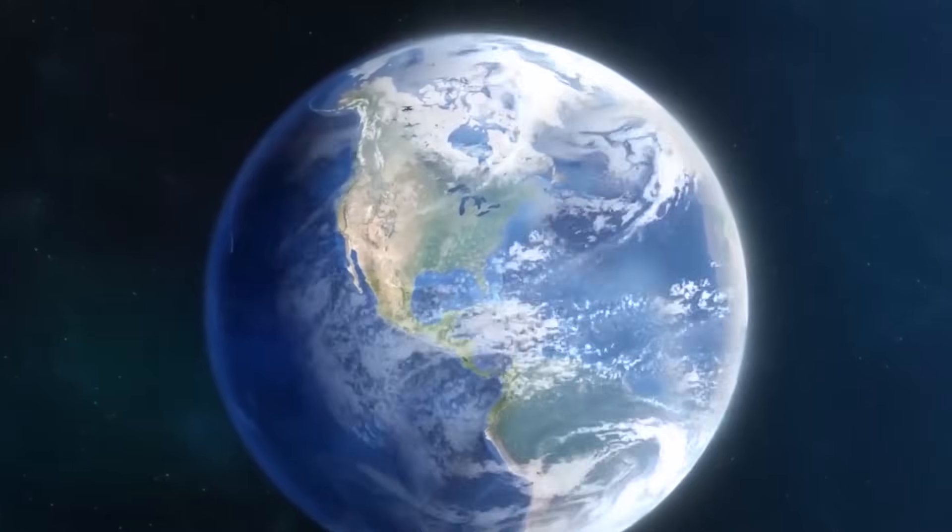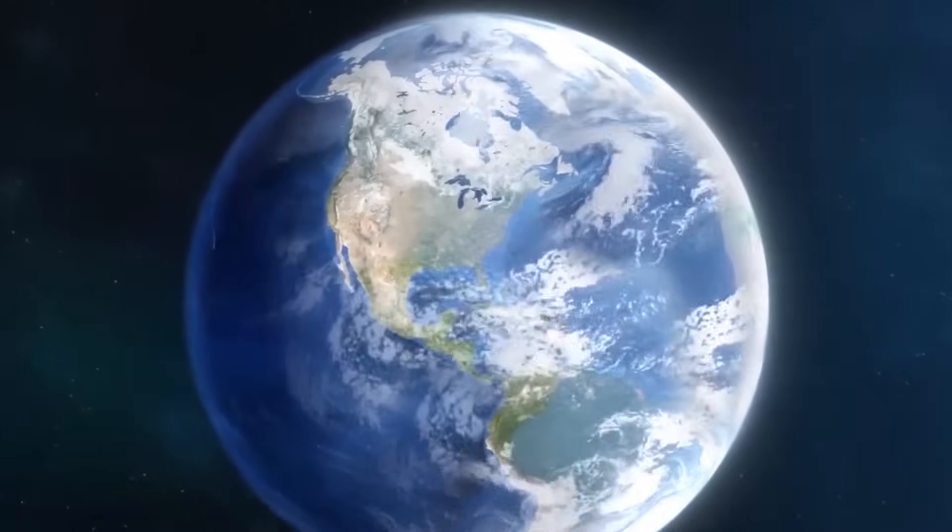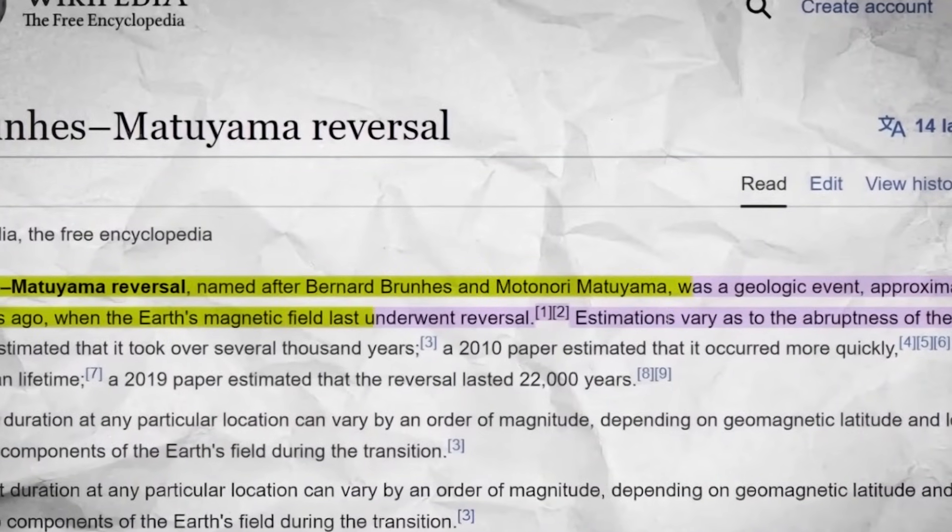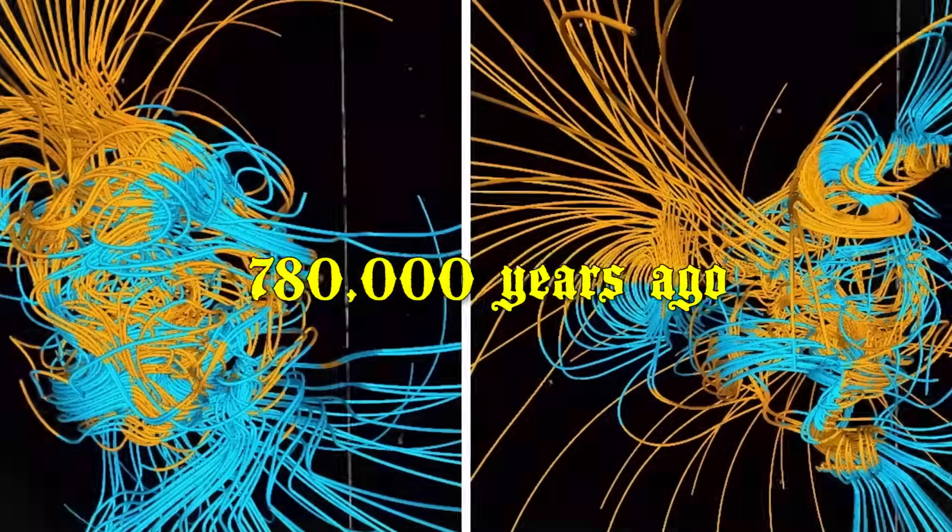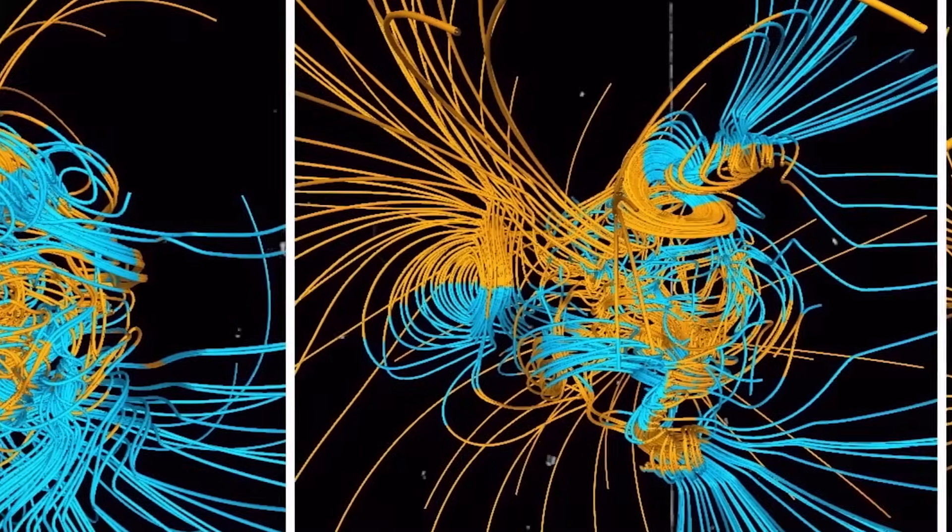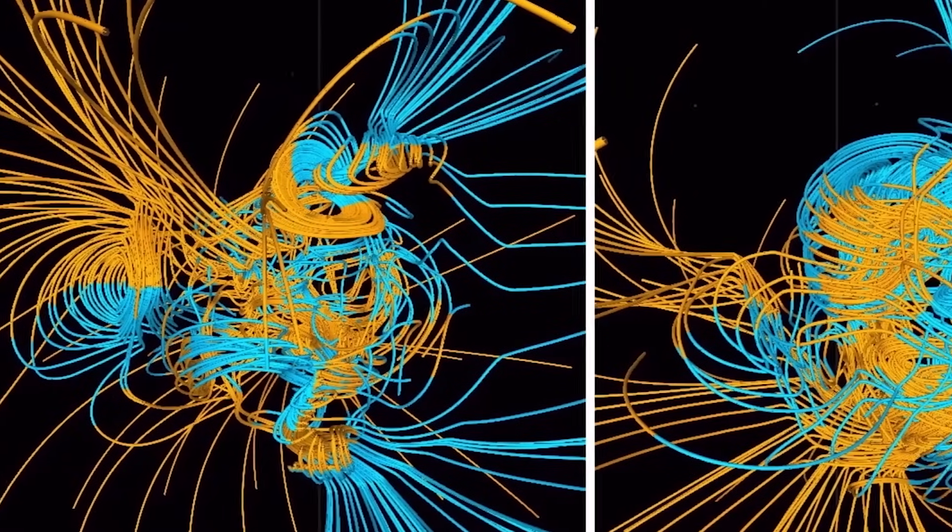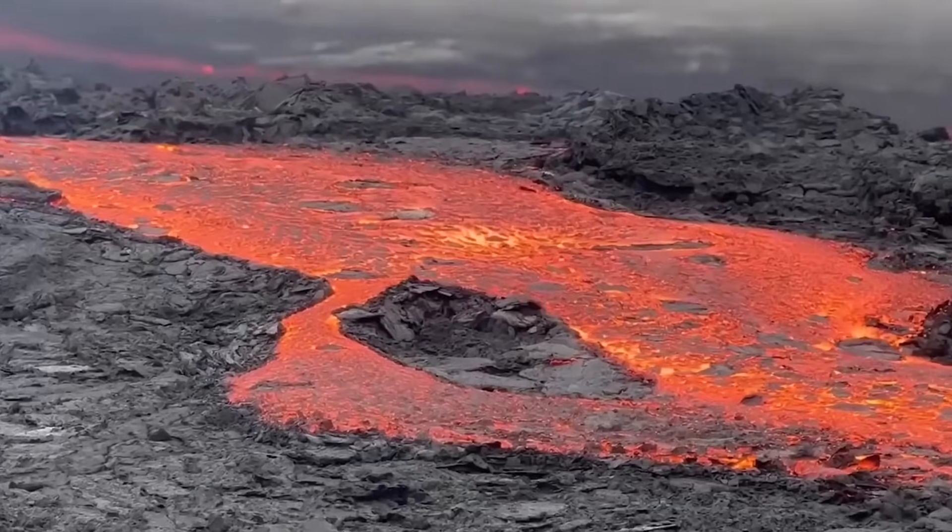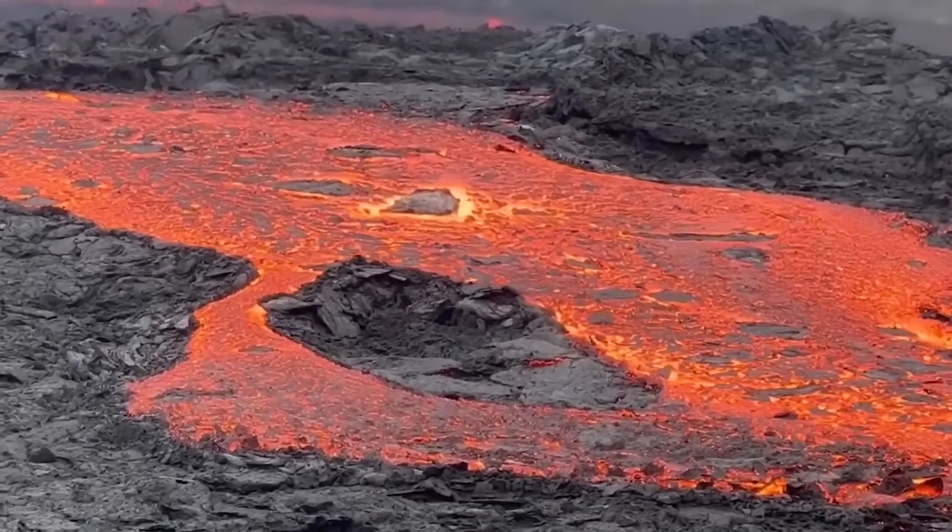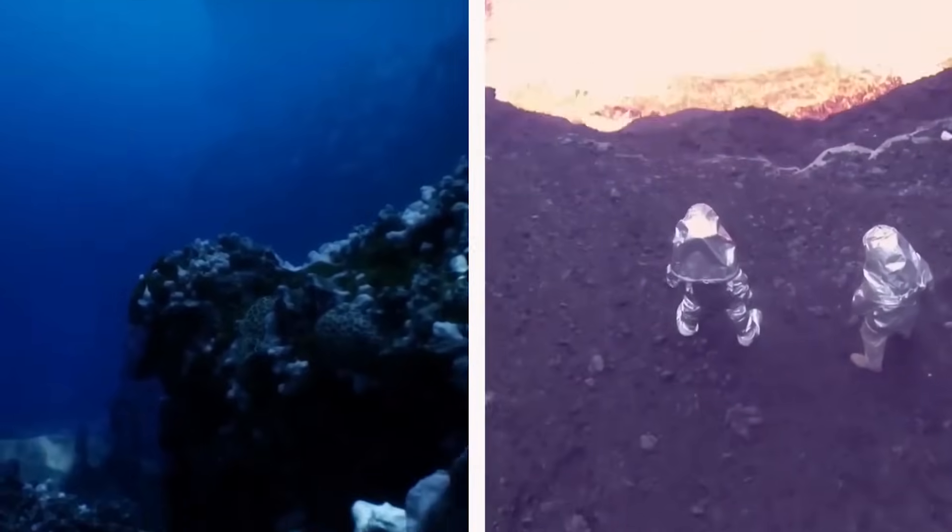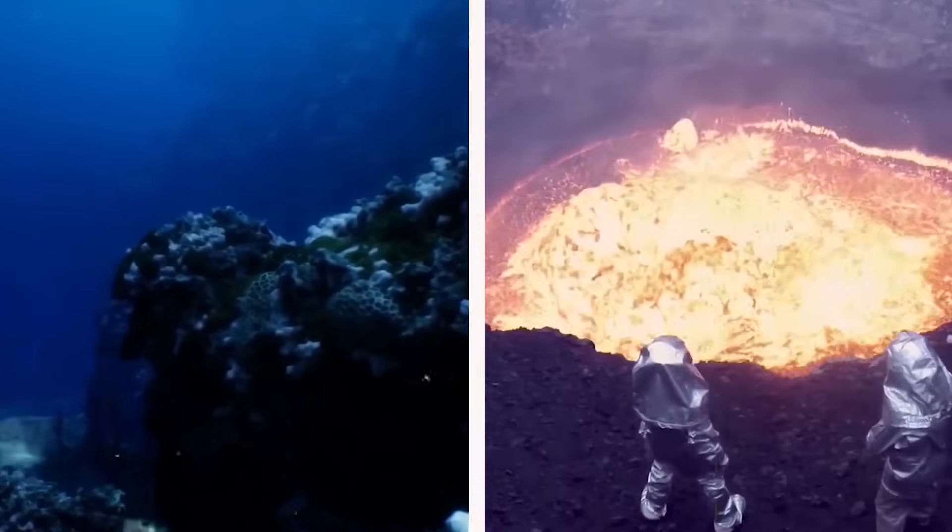The last known occurrence of such a reversal was the Brünnhes-Matuyama reversal, approximately 780,000 years ago. Geomagnetic reversals are documented in Earth's geological records, such as the alignment of magnetic minerals in rock formations and ocean floor sediments, providing evidence of these shifts in the magnetic field.